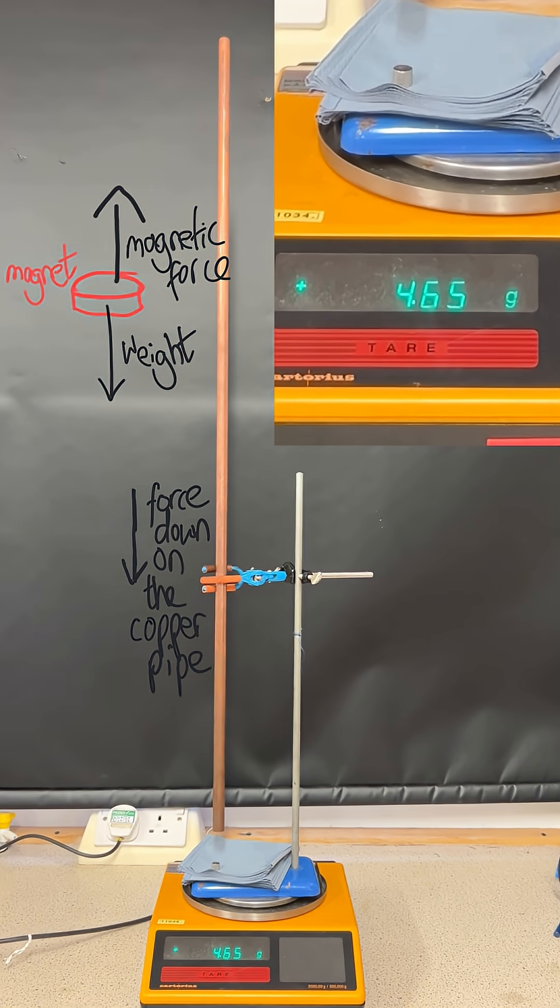I have ignored air resistance, which could provide an additional force up on the magnet, which would mean that the force down on the copper pipe was a little bit less than the weight of the magnet whilst it was falling through the pipe. But that clearly, from the readings that I got, isn't significant in my case.